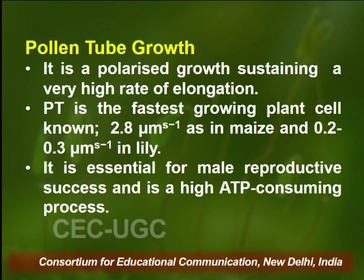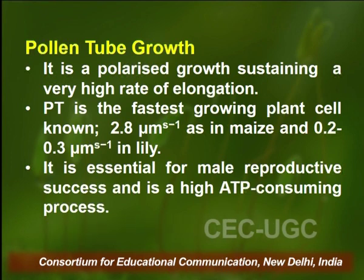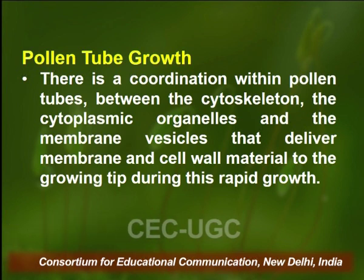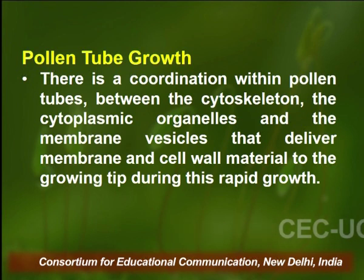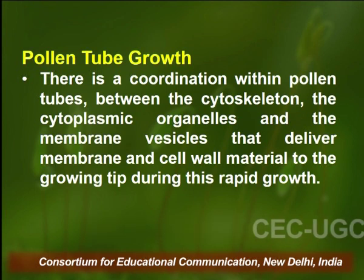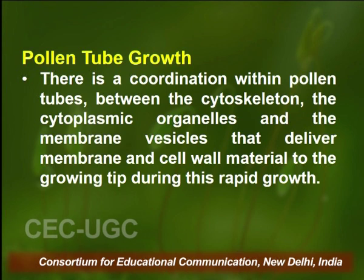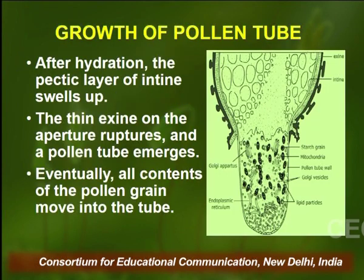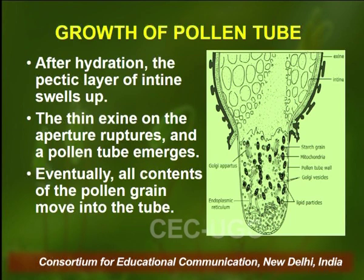The elongation of the pollen tube is a high ATP-consuming process. When the pollen tube is growing, there is coordination within the pollen tube between the cytoskeleton, the cytoplasmic organelles and the membrane vesicles, because they have to deliver material organized into a new cell wall. Most growth of the pollen tube happens at the tip, and you can see in the picture that the tip looks a little different from the rest.